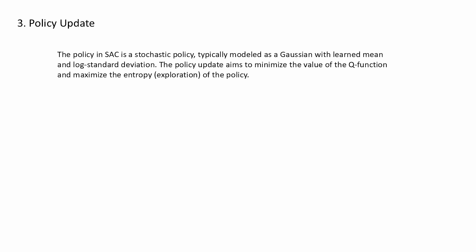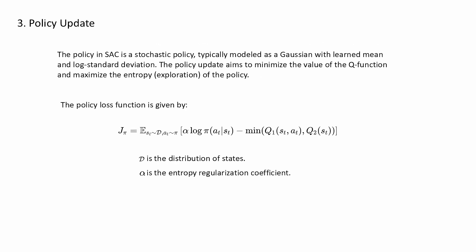Policy Update: The policy in SAC is a stochastic policy, typically modeled as a Gaussian with learned mean and log-standard deviation. The policy update aims to minimize the value of the Q function and maximize the entropy, or exploration, of the policy. The policy loss function is given as follows. D is the distribution of states, and alpha is the entropy regularization coefficient. This formulation leads to a policy that not only maximizes the expected reward but also ensures the policy remains sufficiently stochastic, encouraging exploration.